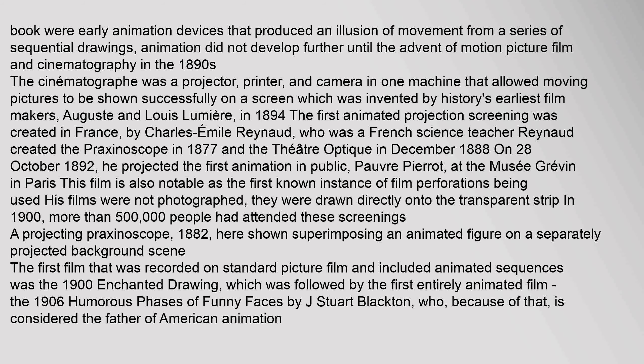Animation did not develop further until the advent of motion picture film and cinematography in the 1890s. The cinematograph was a projector, printer, and camera in one machine that allowed moving pictures to be shown on a screen, invented by Auguste and Louis Lumière. In 1894, the first animated projection screening was created in France by Charles-Emile Reynaud, a French science teacher who created the Praxinoscope in 1877 and the Théâtre Optique in December 1888.